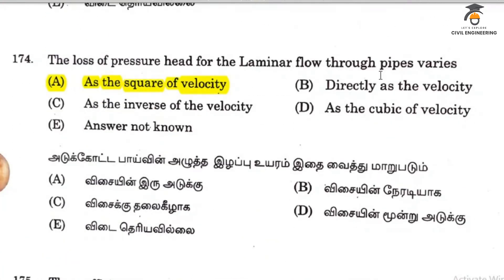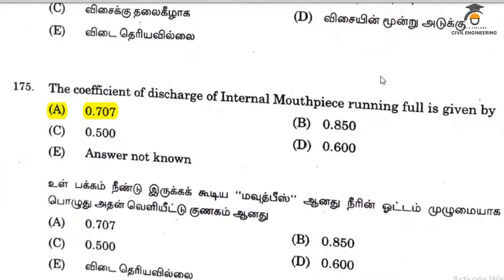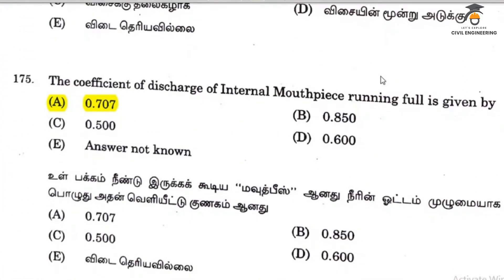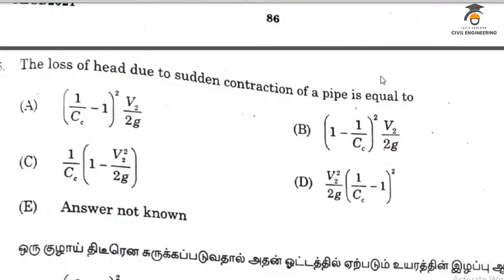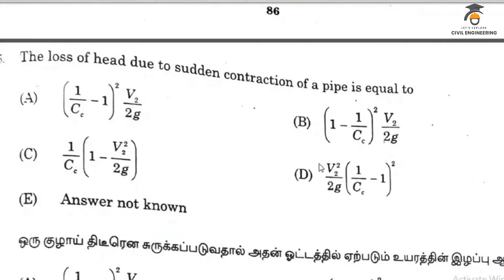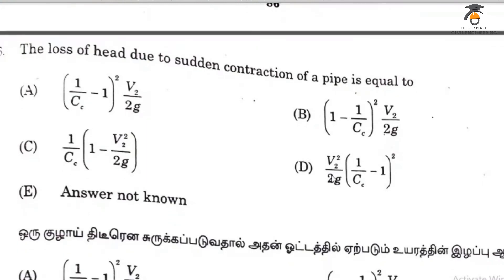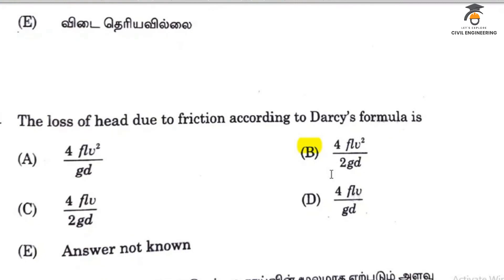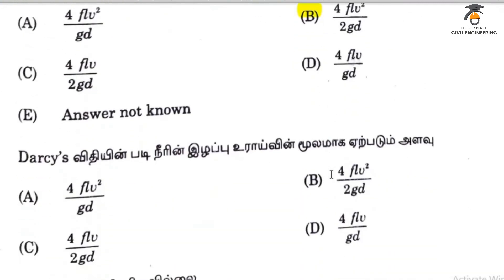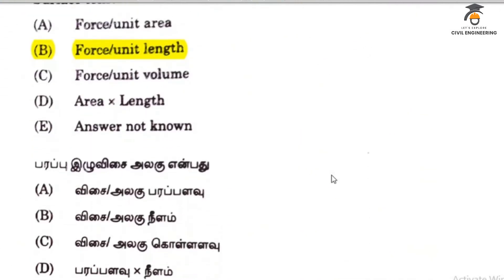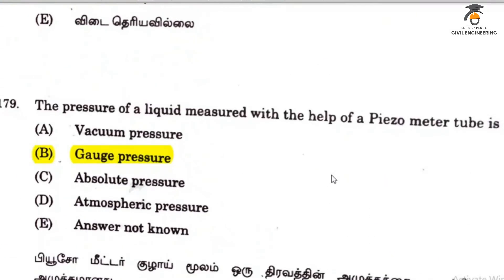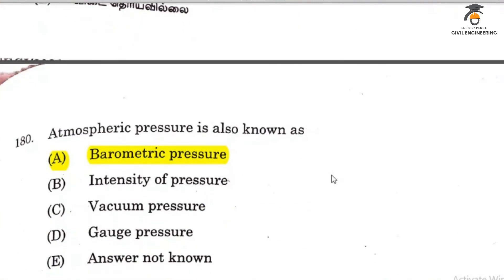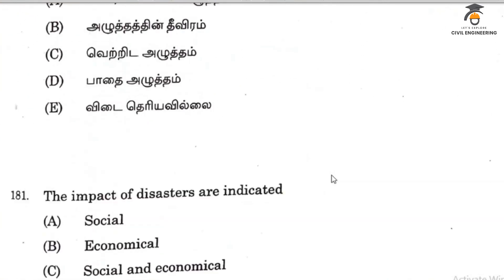Question 173 answer is 0.701A root of 2GH. Question 174 answer relates to the square of velocity. Question 175 answer is 0.707. Question 176 relates to V squared formula, option D: V² by 2G. Question 177 answer is 4FLV² by 2GD. Question 178 is force per unit length. Question 179 is gauge pressure. Question 180 is barometric pressure.